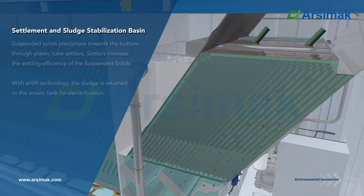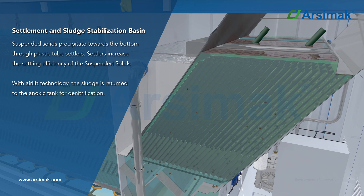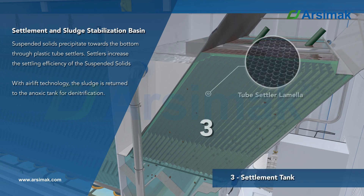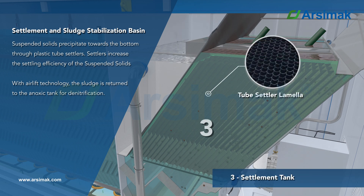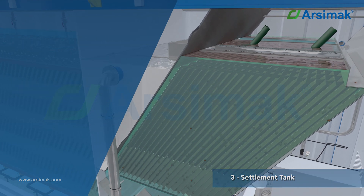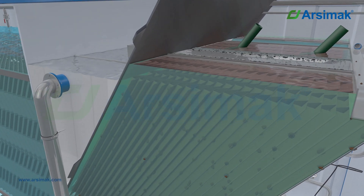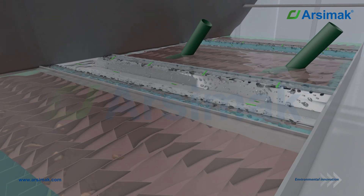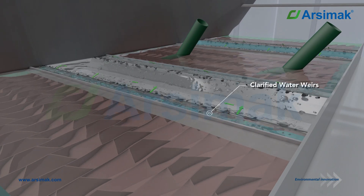After biological treatment, the wastewater gravitates to the settlement and sludge stabilization basin. Suspended solids precipitate towards the bottom through plastic tube settlers, which increase the settling efficiency of the suspended solids.